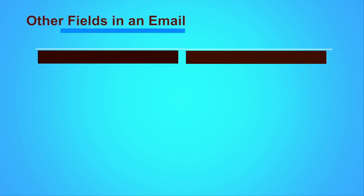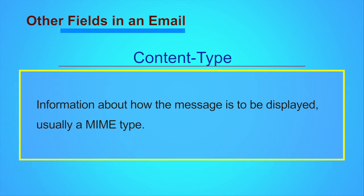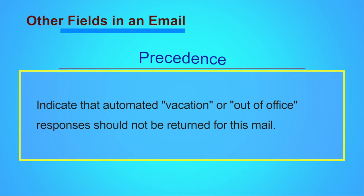There are many fields which are not visible directly through the email application. They are: content type, precedence, message ID, in-reply-to, references, reply-to, sender, archived-at, authentication results, received-SPF, auto-submitted, etc. The content type field contains information about how the message is to be displayed using a MIME type. The precedence field contains values like bulk, junk or list, used to indicate that automated vacation or out-of-office responses should not be returned for this mail — for example, to prevent vacation notices from being sent to all subscribers of a mailing list. Sendmail uses this field to affect prioritization of queued email. With modern high-bandwidth networks, delivery priority is less of an issue than it once was.